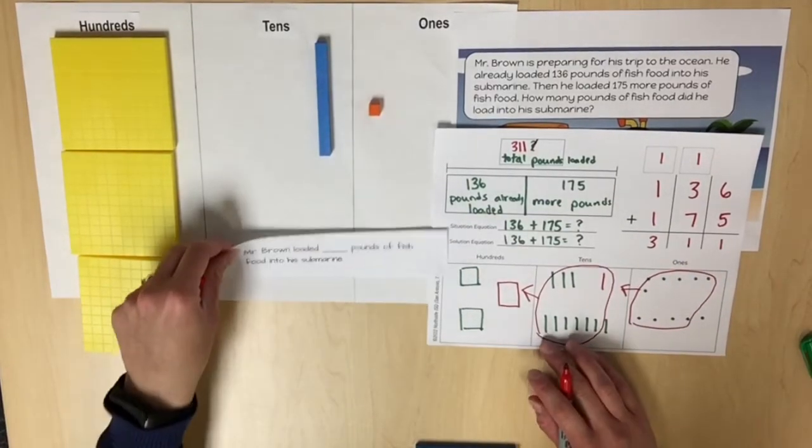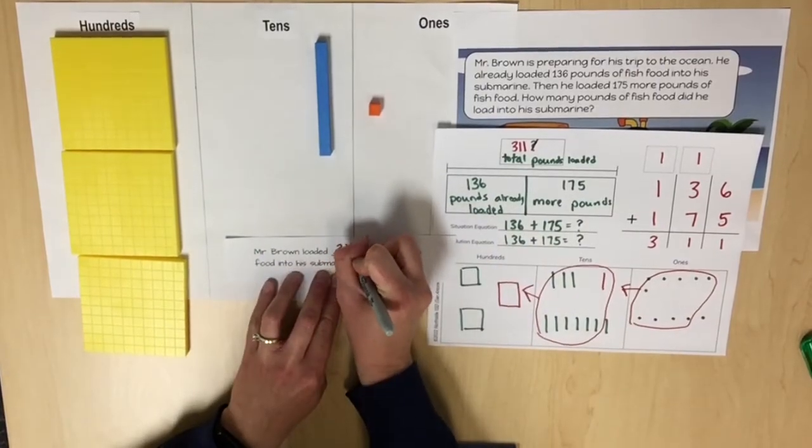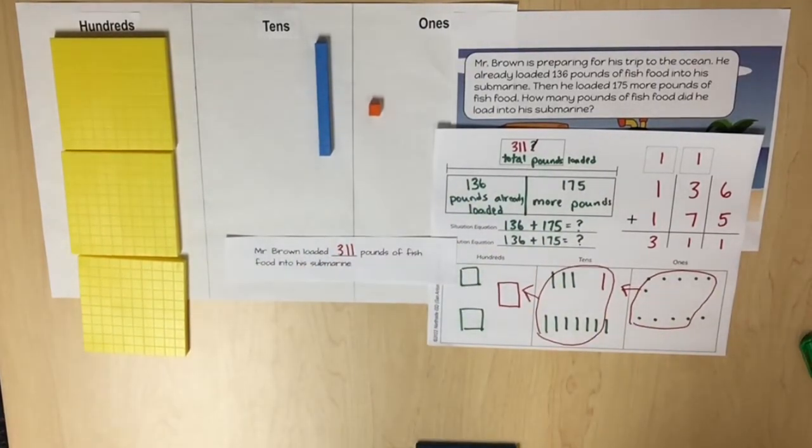In our solution statement, Mr. Brown loaded 311 pounds of fish food into his submarine.